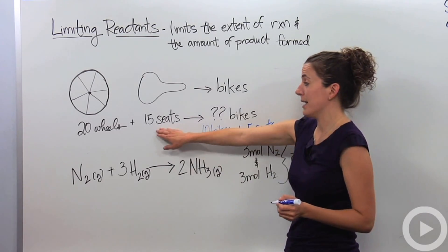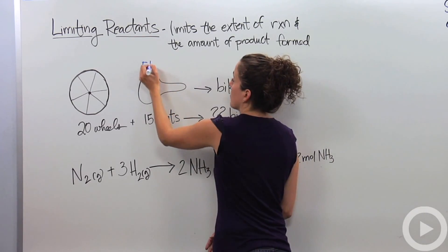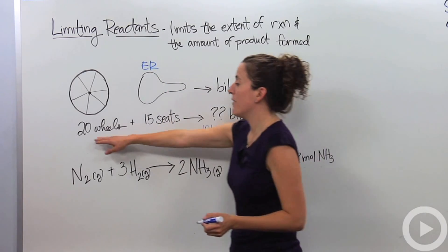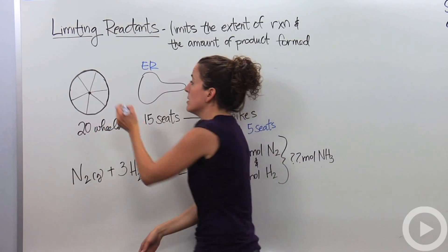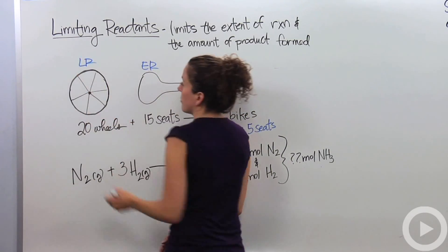I have five seats in excess. This is going to be my excess reactant. I'm limited by the amount of wheels I make. My product is dependent on my limiting reactant, in this case, my wheels. So, I'm going to call this my limiting reactant.